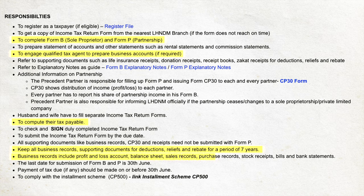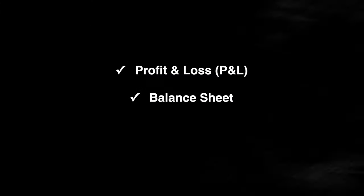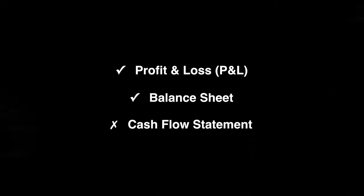Balance sheet, sales records, purchase records, stock receipts, bills and bank statements. The last date of submission for Form B and P is 30th June of the subsequent year. Having said those, that leads me to the main point of this video, which is to produce your own P&L and balance sheet. There is no need for cash flow statements for sole proprietors, but you can always prepare your own simple cash flow tracker — it will be very helpful when you are reconciling your bank statements.